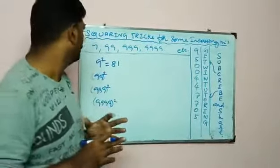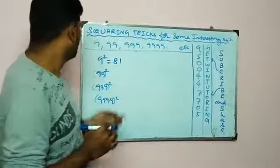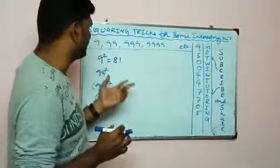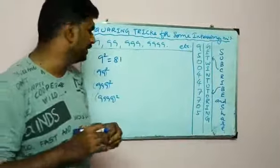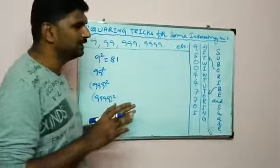We all know 9 squared value is 81. This is how 9 squared is 81. The Vedic Mathematics concept applies to 99 squared, 999 squared, using these tricks.